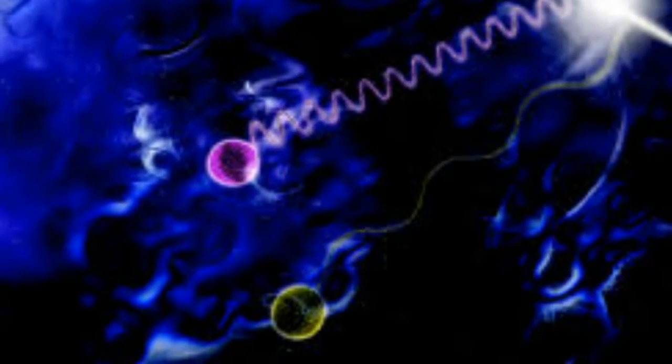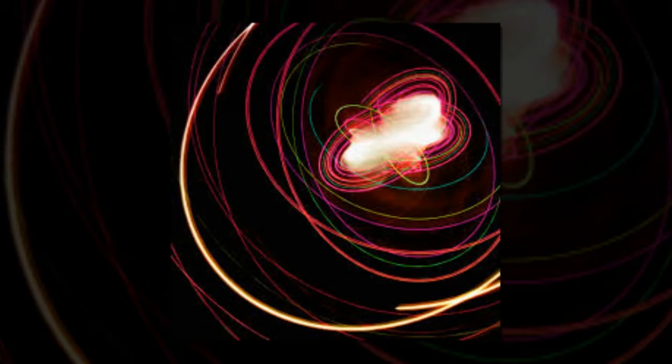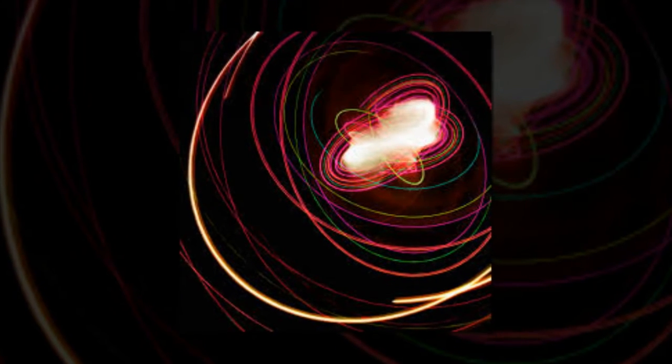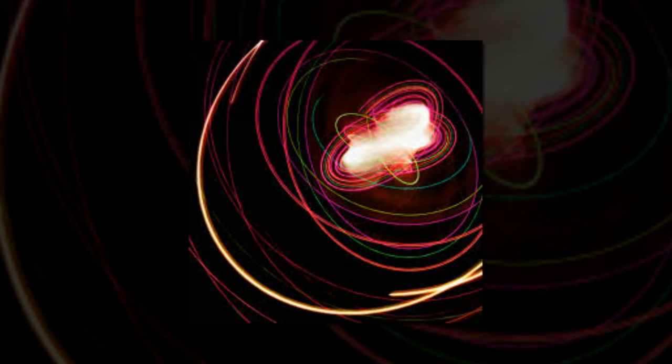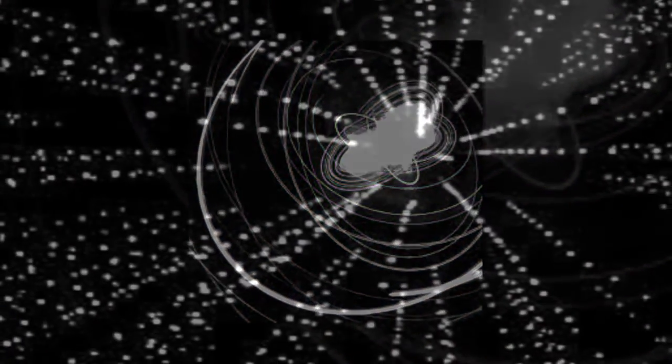Quantum entanglement is a curious phenomenon that occurs when two particles remain connected, even over large distances, in such a way that actions performed on one particle have an effect on the other. For instance, one particle might be spun in a clockwise direction. The result on the second particle would be an equal anti-clockwise spin.